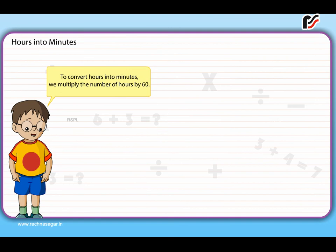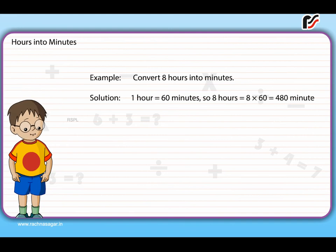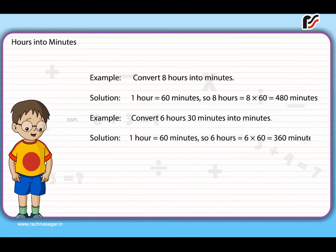Hours into minutes: To convert hours into minutes, we multiply the number of hours by 60. Example 1: Convert 8 hours into minutes. Solution: 1 hour = 60 minutes, so 8 hours = 8 × 60 = 480 minutes. Example 2: Convert 6 hours 30 minutes into minutes. Solution: 6 hours = 6 × 60 = 360 minutes, and 6 hours 30 minutes = 360 + 30 = 390 minutes.